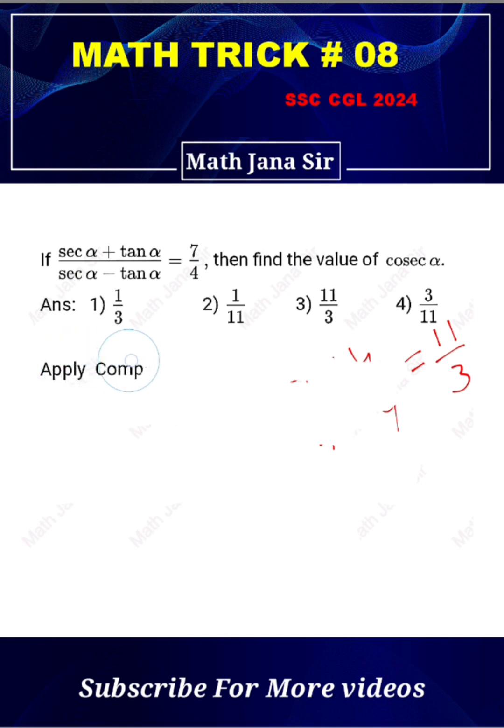If you apply componendo and dividendo on both sides, then we get (sec α + tan α + sec α - tan α) divided by (sec α + tan α - sec α + tan α) which is equal to (7 + 4) / (7 - 4).